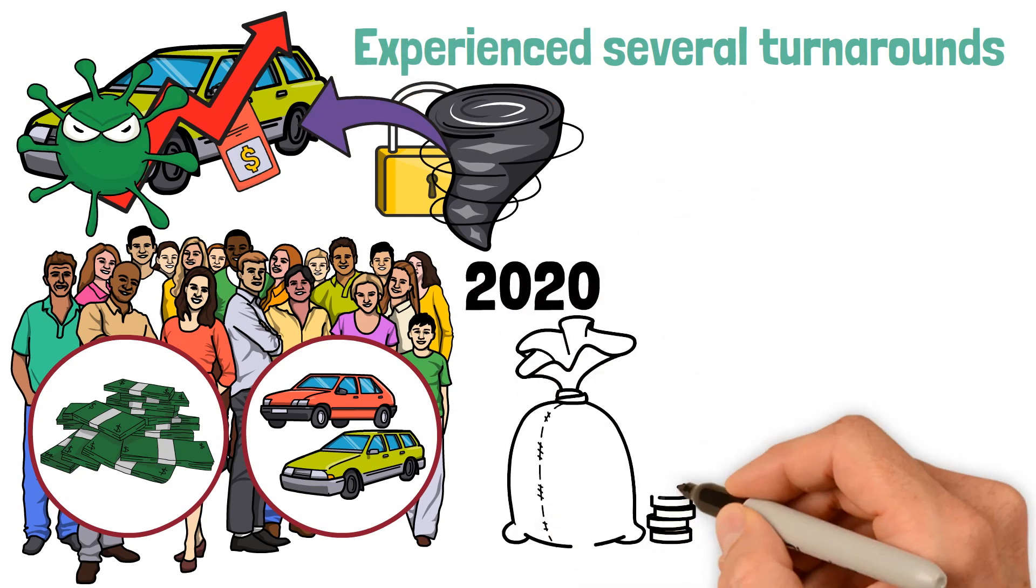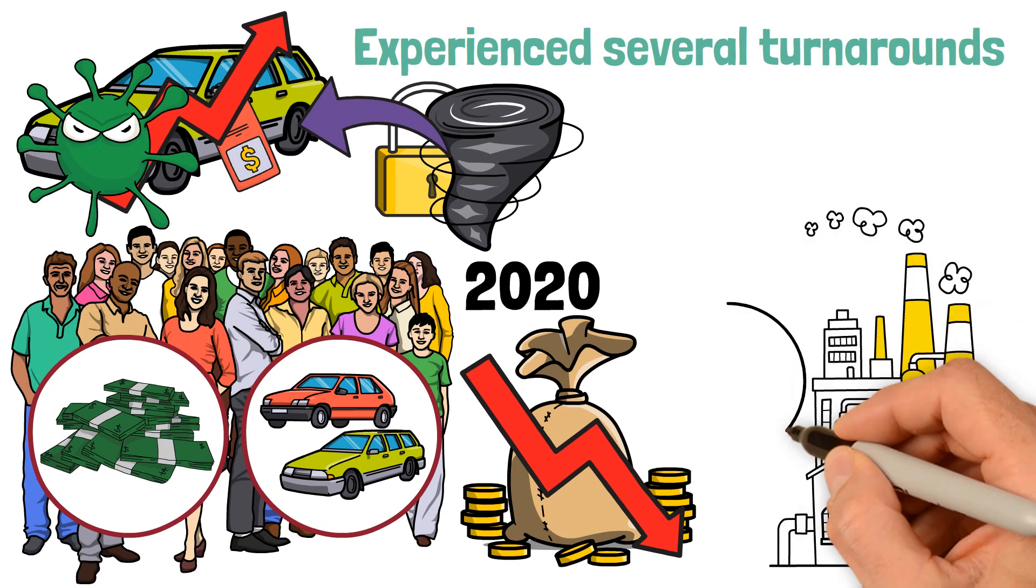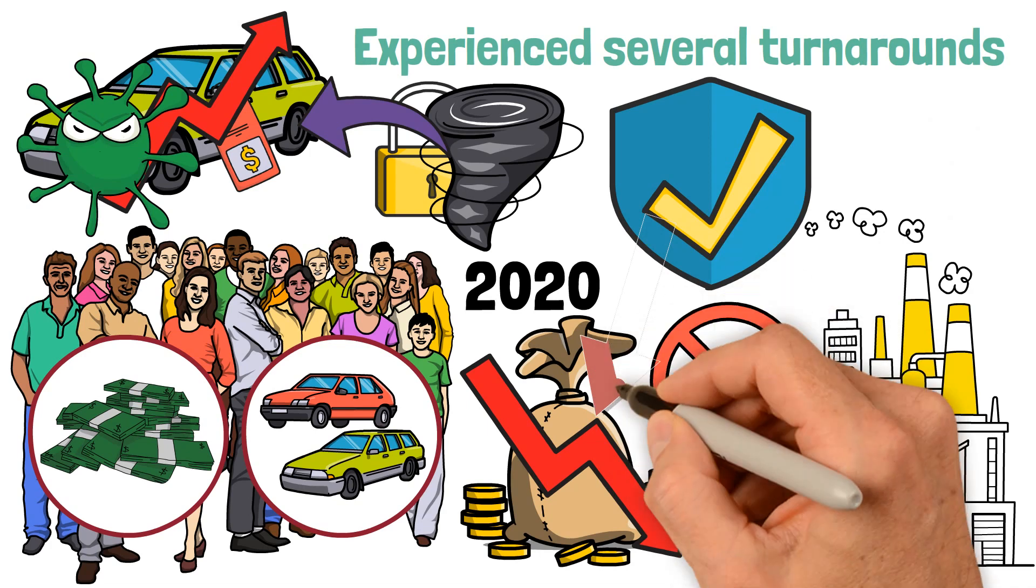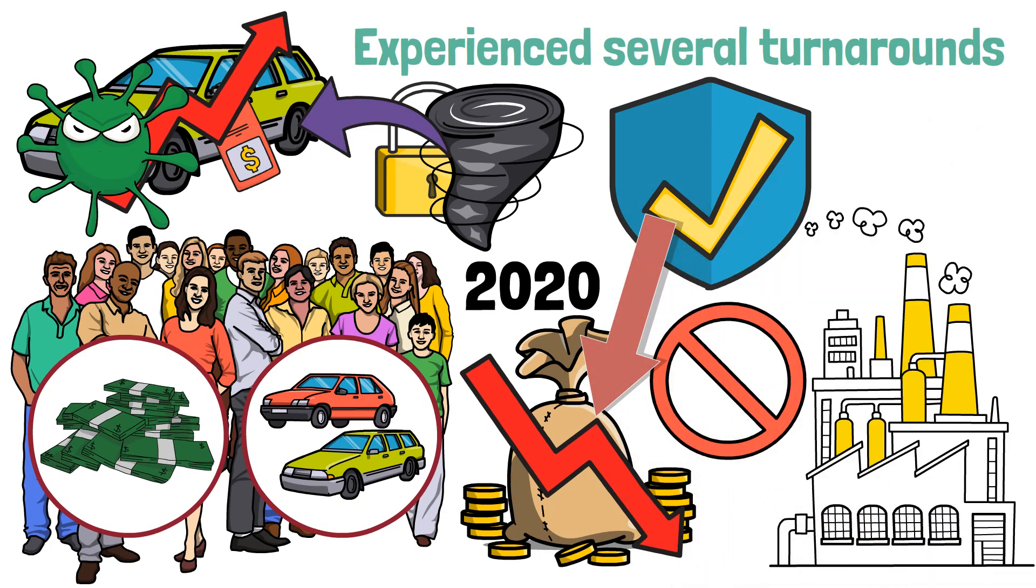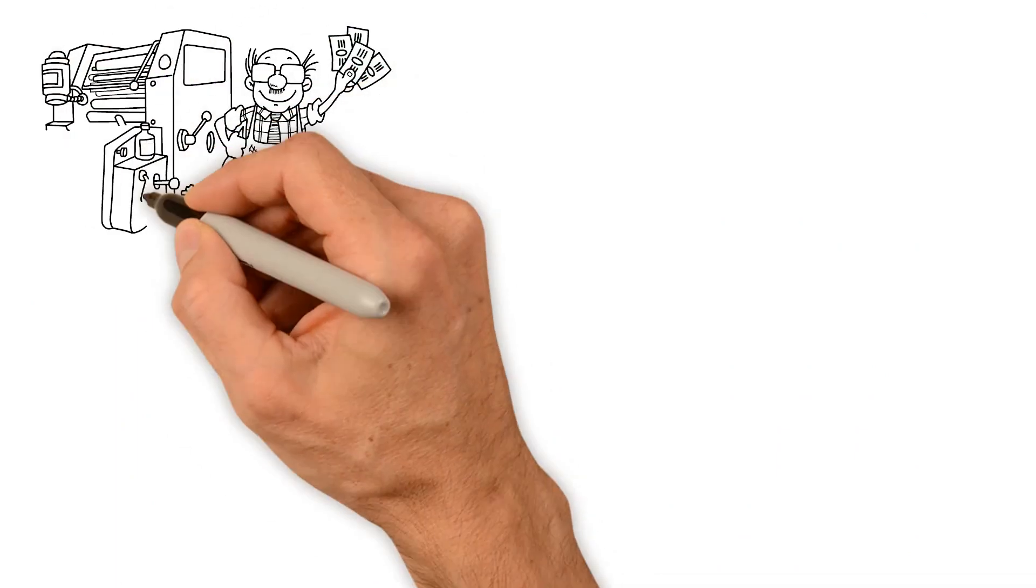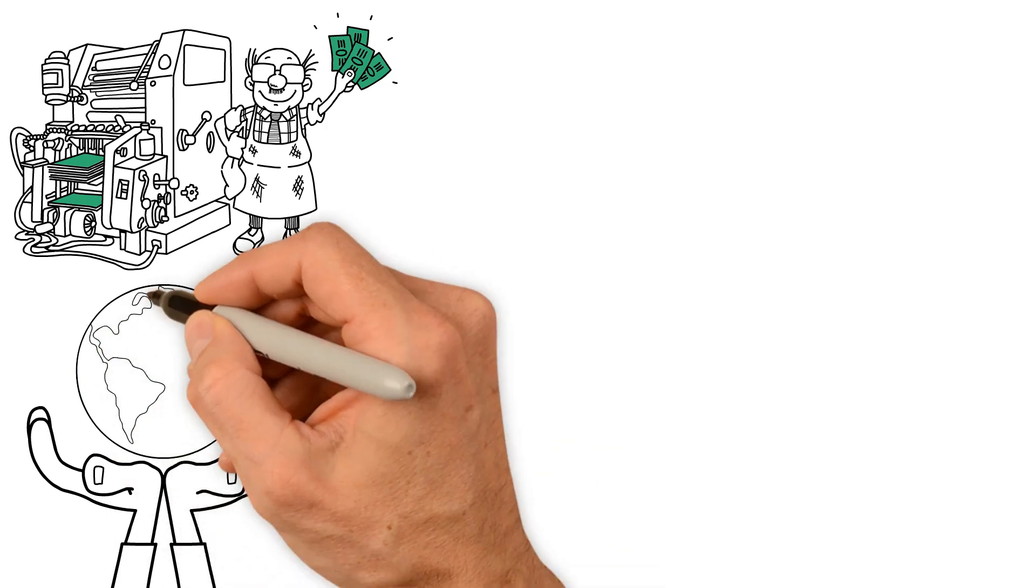2020 was predicted to be a year of deep recession, and many manufacturers were forced to cancel their orders for semiconductors to protect themselves against the impacts of this supposed recession. But before we could experience it, governments worldwide began to print money to save the situation, and somehow, the world miraculously survived.